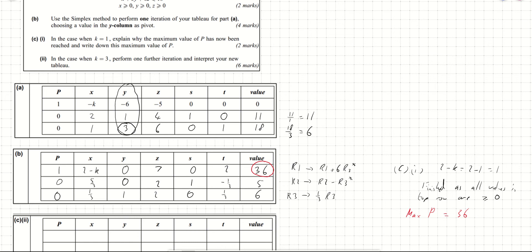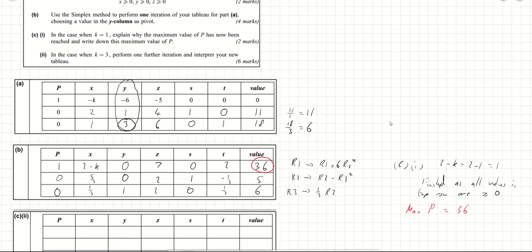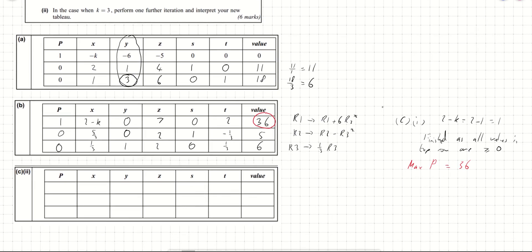Now for part D, when k equals 3, we perform one further iteration. With k equal to 3, the top row becomes 1, minus 1, 0, 7, 0, 2, 36. Because we have minus 1 in the x column, that is our pivot column. To choose the pivot row, we divide: 5 divided by five-thirds is 3, and 6 divided by one-third is 18. The smaller positive value is 3, so we pivot around the value five-thirds in row 2.